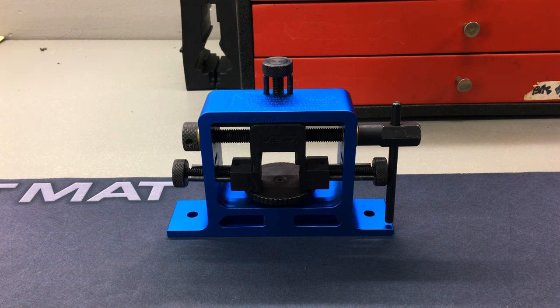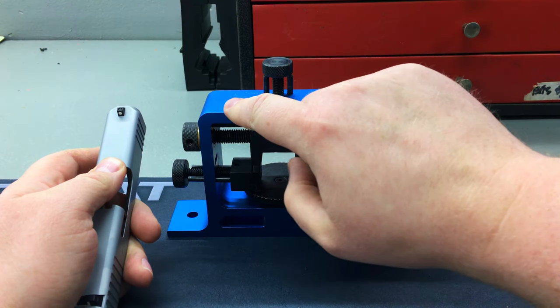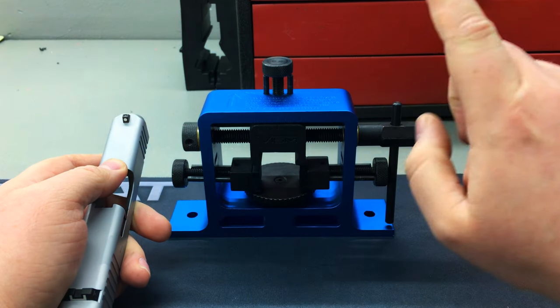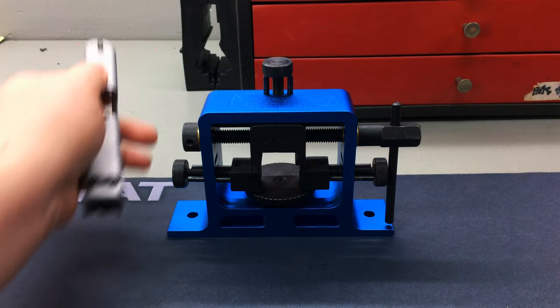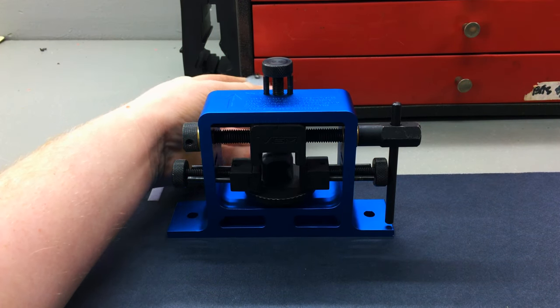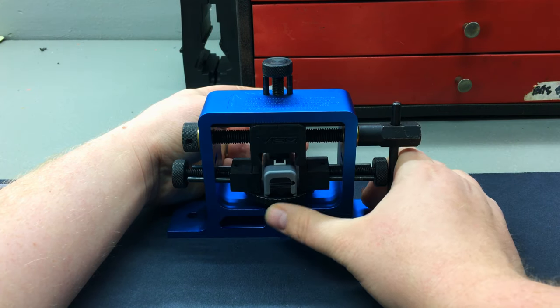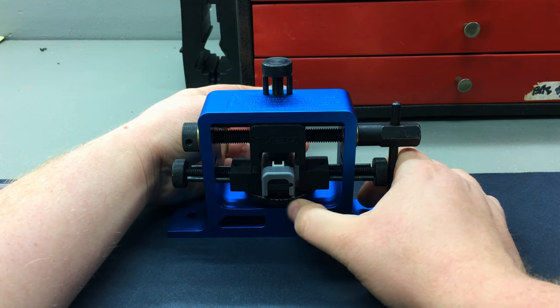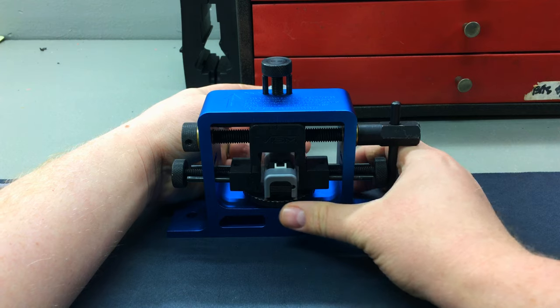All right, so what we're going to do is go ahead and install our slide. And you'll notice there's an arrow up here on the top that tells you to orient it muzzle facing out. And then we'll go ahead and adjust this base here until we get it to the desired height. And then we'll clamp down both sides to make sure this is firmly in place.